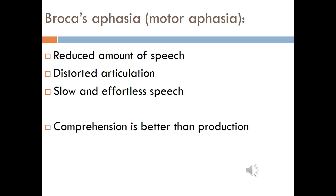There are different kinds of aphasia according to the location of damage in the left hemisphere, which is responsible for language production and comprehension. The first one is called Broca's aphasia. Characteristics include reduced amount of speech, distorted articulation, slow and effortful speech, and comprehension being better than production.